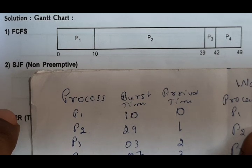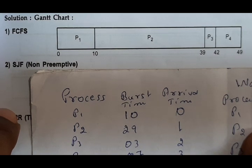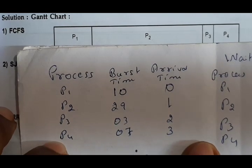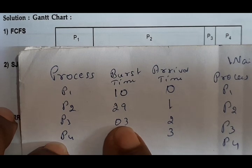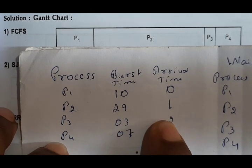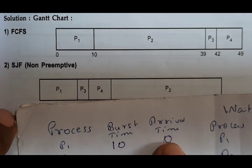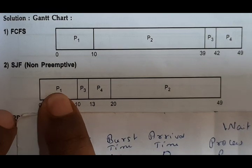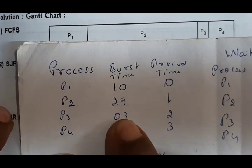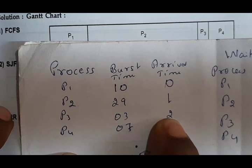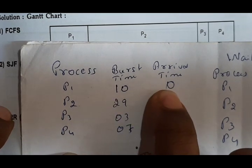Second one is SJF — Shortest Job First. Non-preemptive means when a process starts, it completely executes. In SJF, whichever process has the least burst time, that process executes. Here in the example, 3 is the shortest burst time, but it arrived at time 2. You can't start it first because at time 0, P1 has already arrived. Even though P2 and P3 have less burst time, you can't take them because P1 is already ready to execute. The CPU doesn't want to waste time.